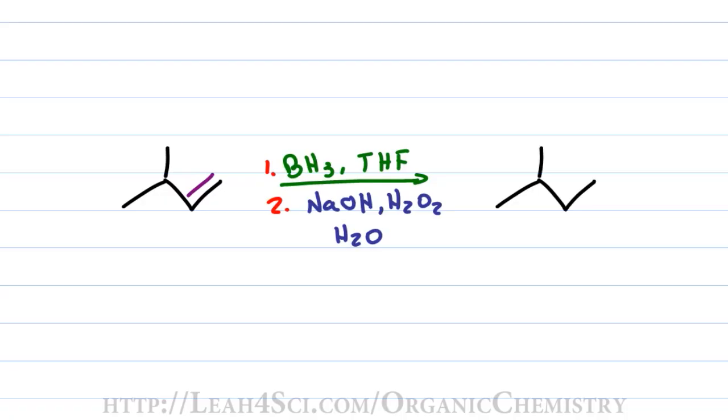Hydroboration is an interesting reaction because it is both regioselective and stereoselective. Our starting molecule has a pi bond between a secondary and a primary carbon, and when the pi bond breaks, hydrogen adds to the secondary carbon and the alcohol adds to the primary carbon, making it an anti-Markovnikov reaction. But because hydrogen and alcohol add to the same phase of the pi bond, that makes it a syn addition.